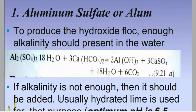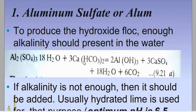Many waters have bicarbonate alkalinity naturally present. When dissolved in water, aluminium tends to hydrolyze into aluminium hydroxide. The reaction is: Al2(SO4)3·18H2O reacted with 3Ca(HCO3)2 gives the formation of aluminium hydroxide, Al(OH)3, which is the floc that attracts colloids and impurities present in the water, causing them to precipitate at the bottom.